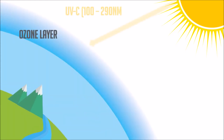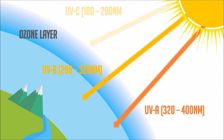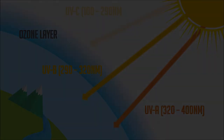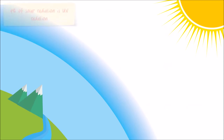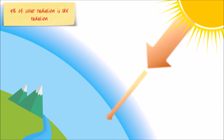The most energetic UV radiation, UV-C, is lethal, but nearly all of it is absorbed by ozone and oxygen in the atmosphere. However, both UV-B and UV-A radiation can reach the earth's surface and are potentially damaging to living organisms. Although nine percent of the sun's radiation is UV, much less reaches the earth's surface because ozone in the stratosphere strongly absorbs it — which is why the stratospheric ozone layer is often called the ozone shield.